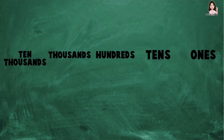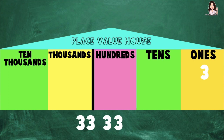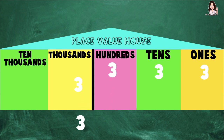How about if we have 33,333? Again, children, let's find out the place value of each digit. The first digit from the right is digit 3 — it will be at the ones place. The second digit from the right is digit 3 — it will be at the tens place. The third digit from the right is digit 3 — it will be at the hundreds place. The fourth digit from the right is at the thousands place. And the fifth digit from the right is at the ten thousands place.